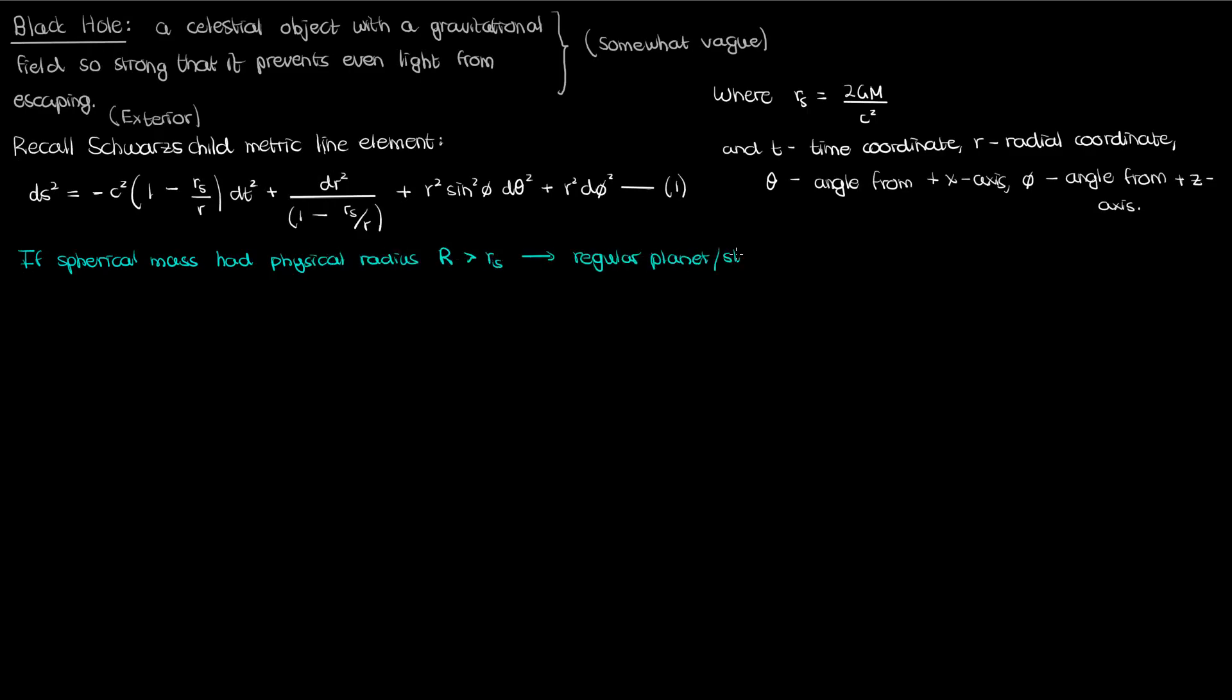An example of this is the Sun. The Sun has a mass of 1.989 x 10 to the 30 kilograms. Its corresponding Schwarzschild radius is roughly 3 kilometers, but its physical radius is 6.96 x 10 to the 5 kilometers, so much larger than its Schwarzschild radius.